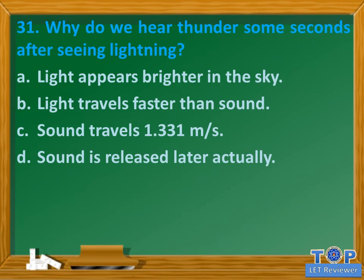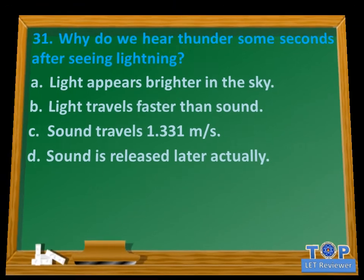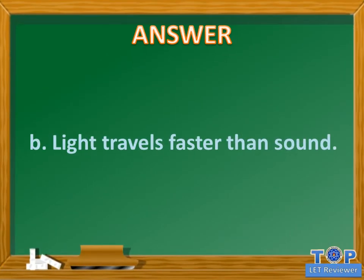Question number 31. Why do we hear thunder some seconds after seeing lightning? A. Light appears brighter in the sky. B. Light travels faster than sound. C. Sound travels 1,331 m/s. D. Sound is released later actually. Answer: B. Light travels faster than sound.